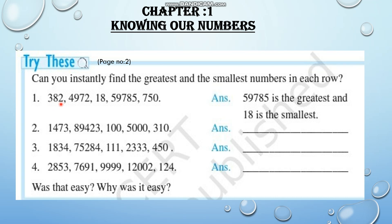Look at these numbers: 382, 4972, 18, 59,785, and 750. Here the given numbers have different numbers of digits. So you can easily find that 59,785 is the greatest number, because it is the only 5-digit number given. And 18 is the smallest number, because it is the only 2-digit number given.